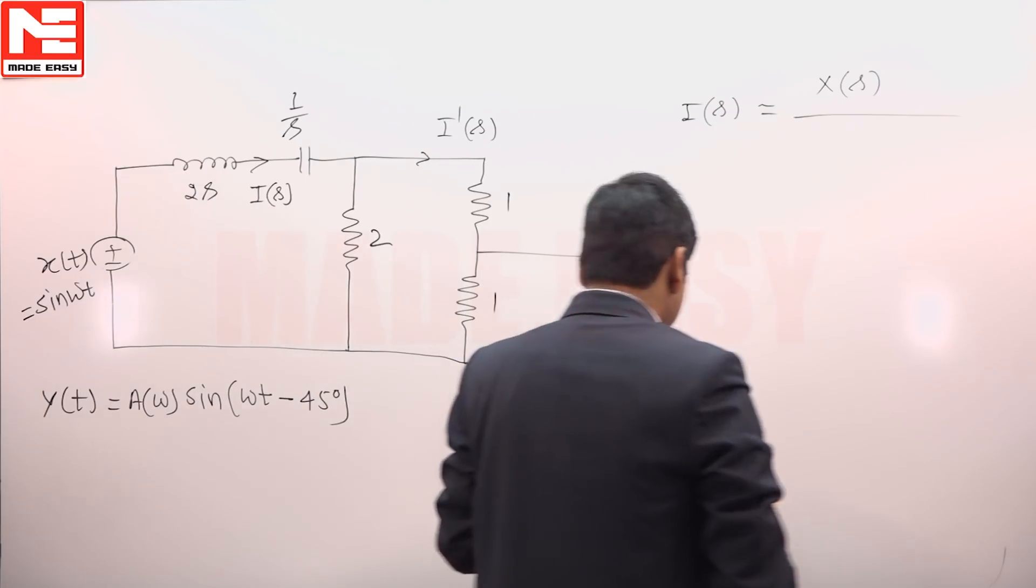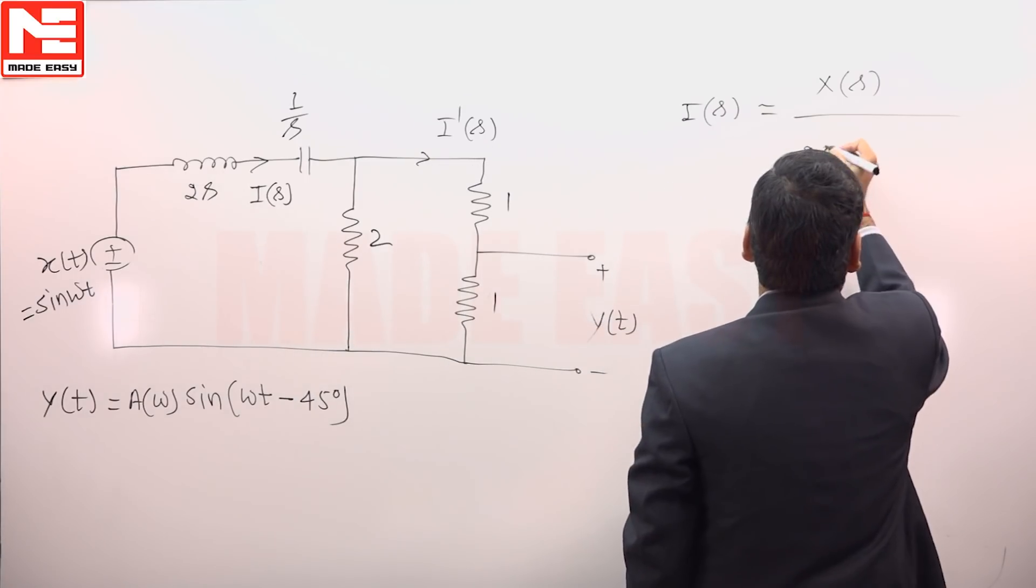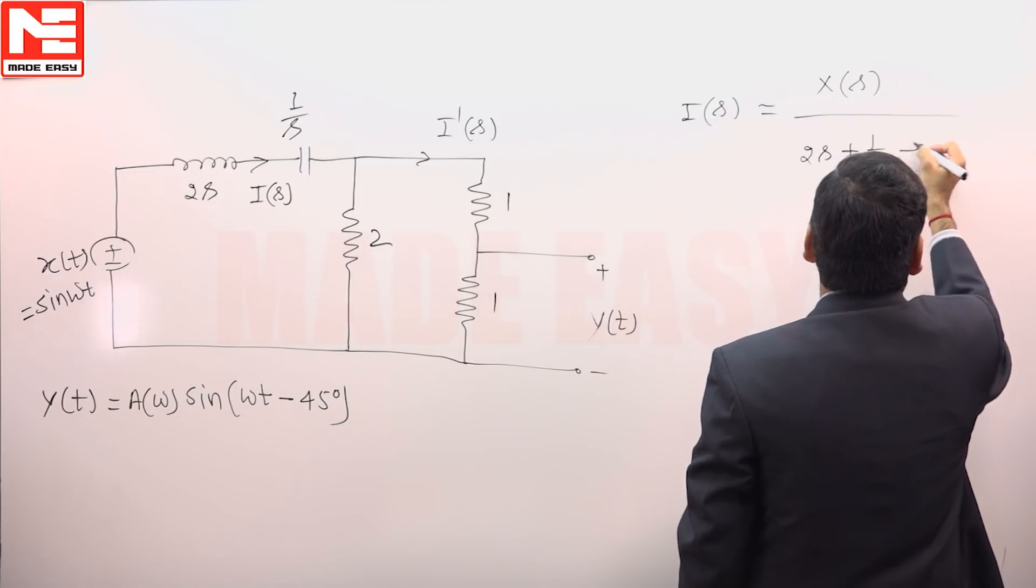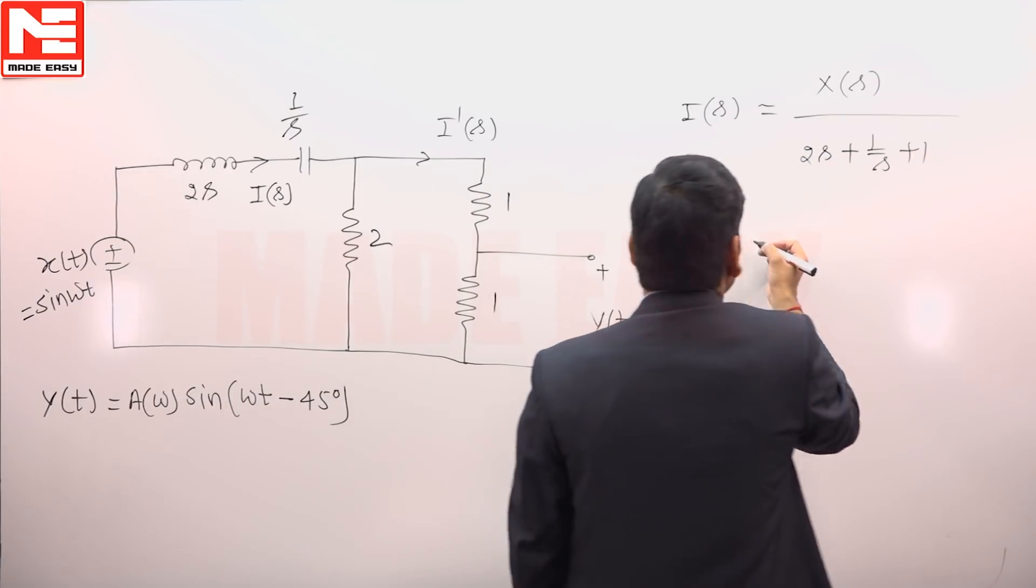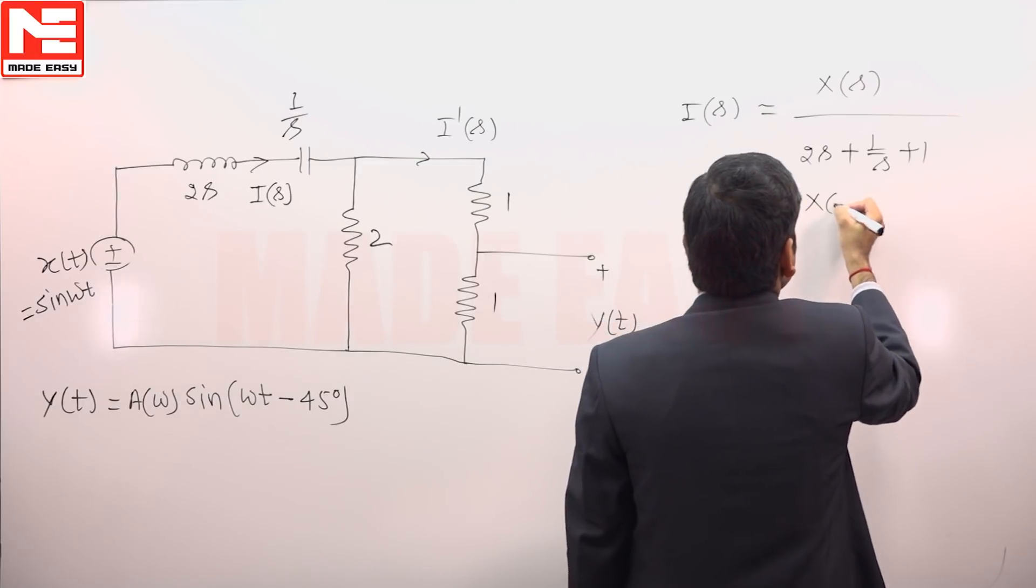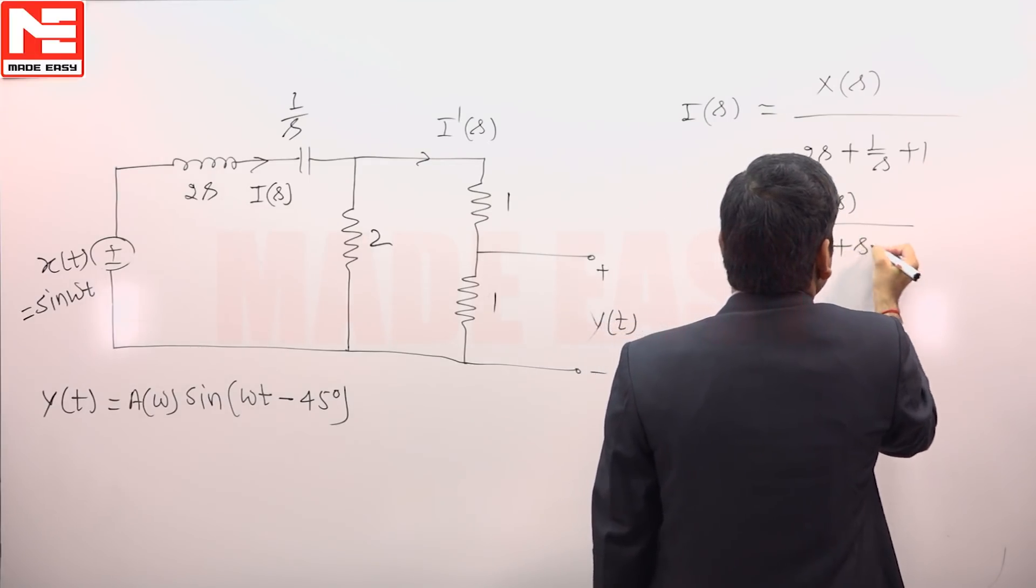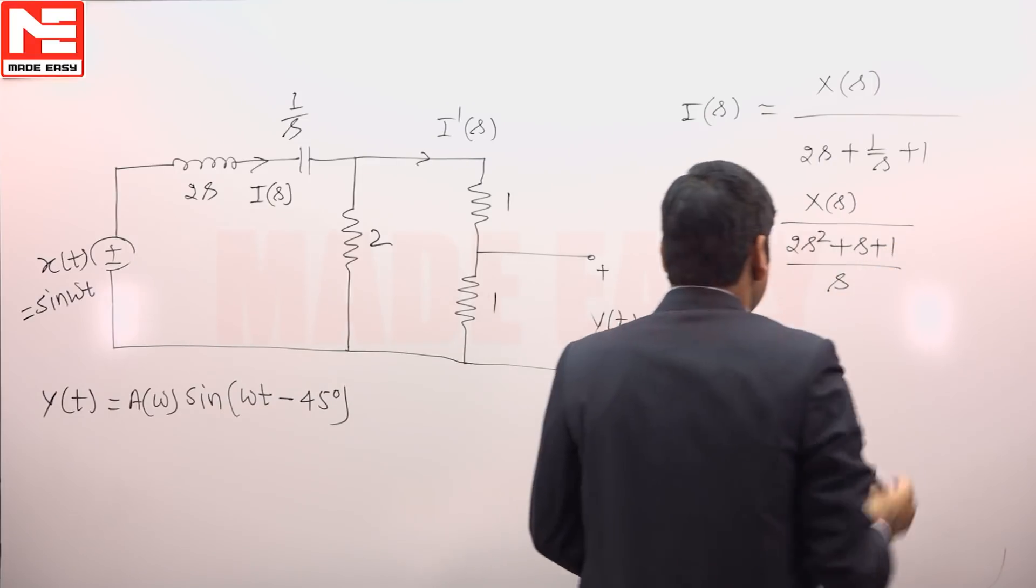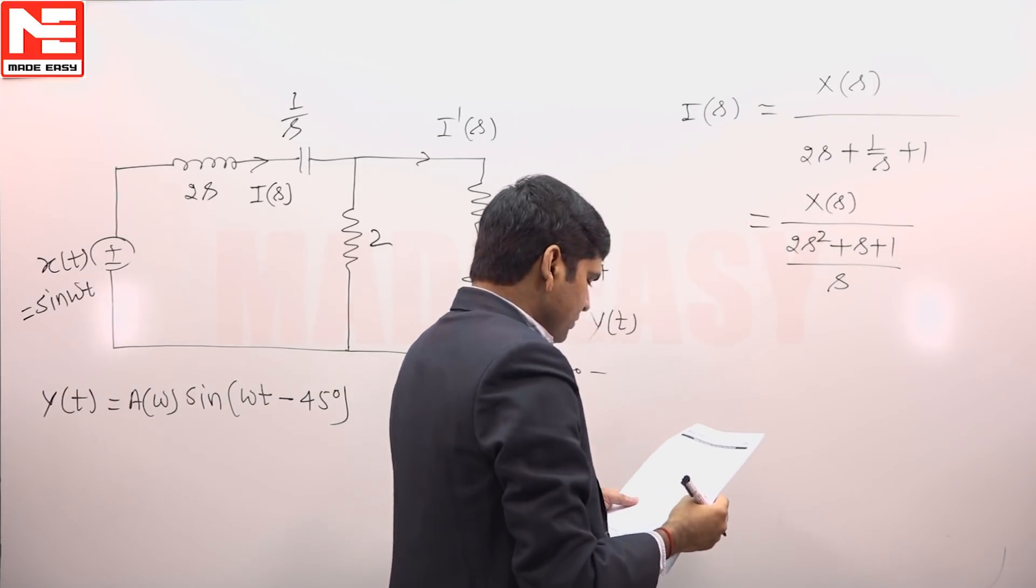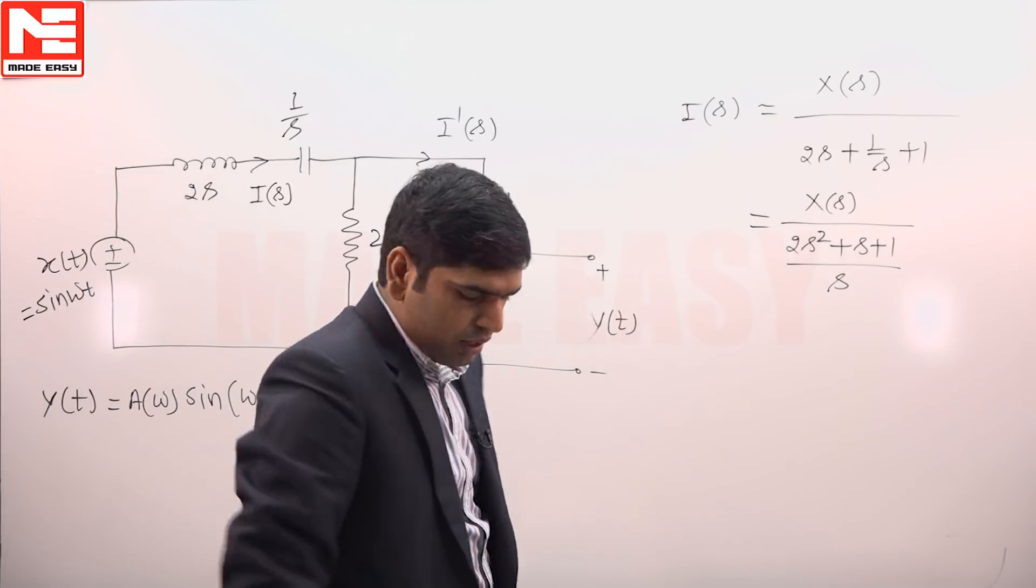1 will get added. This will become 2s + 1/s + 1. On simplification, this is equal to x(s) divided by (2s² + s + 1)/s. This is the value of i(s).